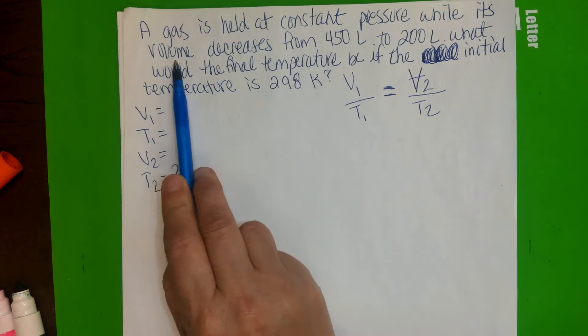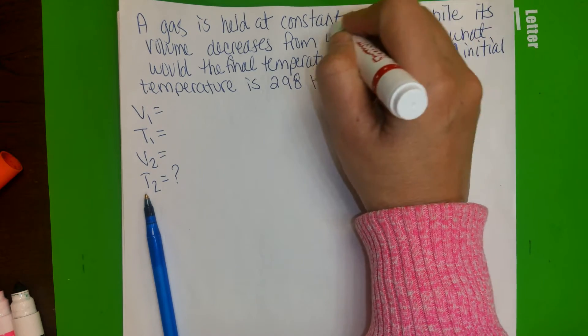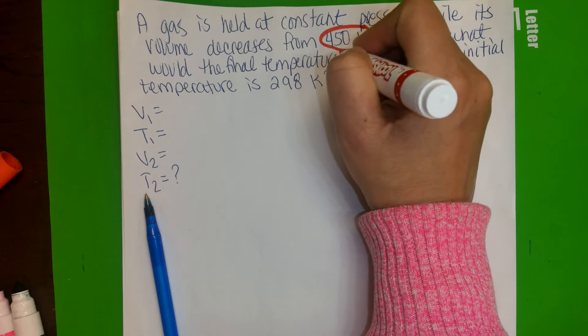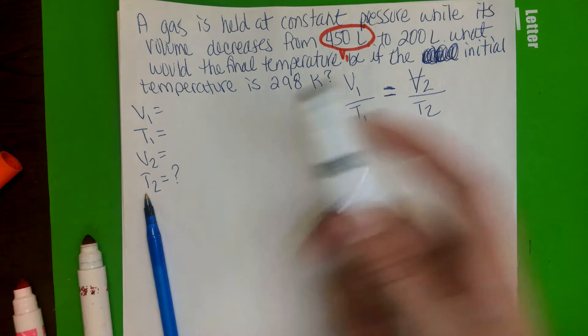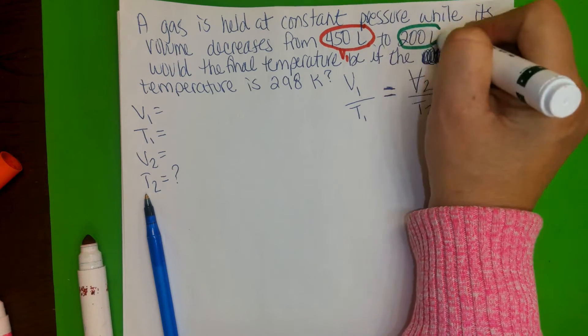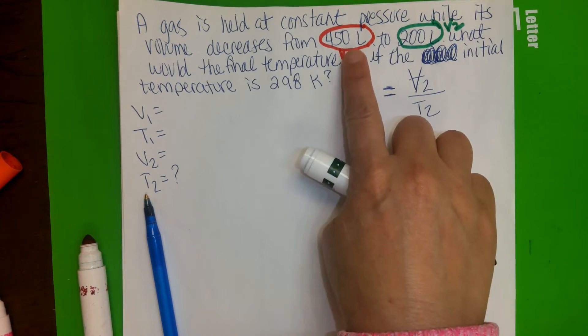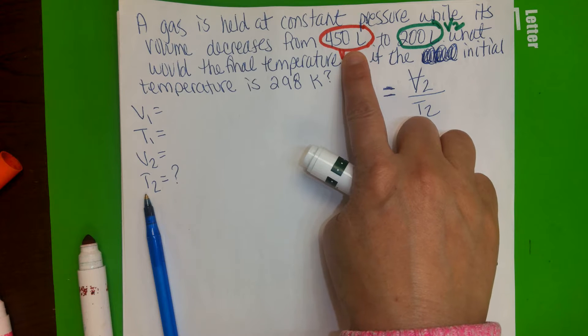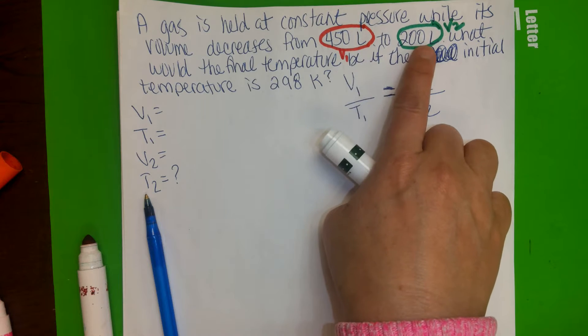We're dealing with volume here. For this one, this will be the first volume, V1. And the second volume would be 200 liters, V2. Because it started with 450 liters and then it went all the way to 200, that's why it's first and then this one's second.